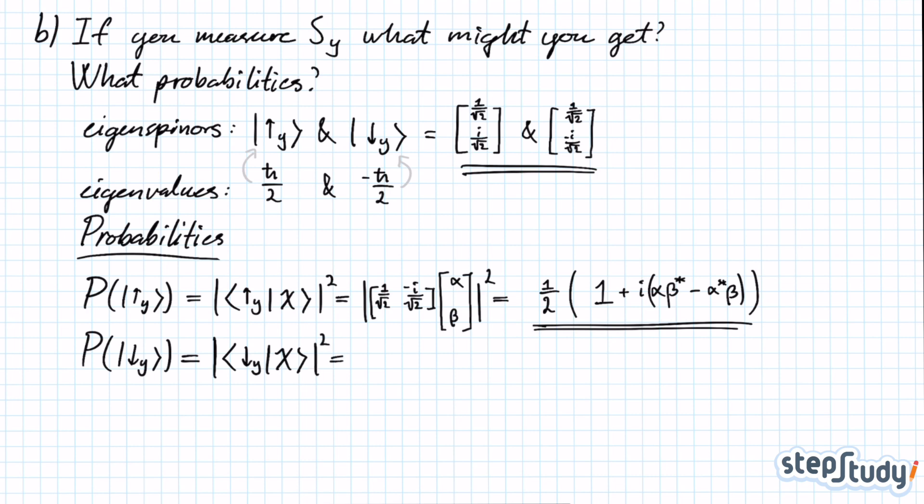Of course, it's completely the same method. Instead of using spin up, you just use spin down in your calculations. When you're done, you'll find a result that looks similar to the probability of finding spin up in the y-direction. The only difference is that inside the parentheses, the terms that are conjugated are the opposite ones.